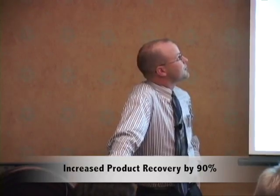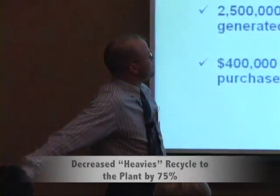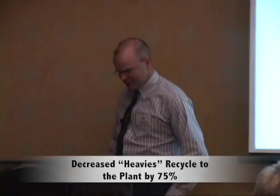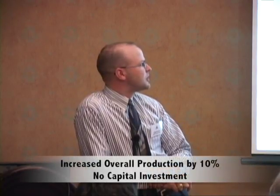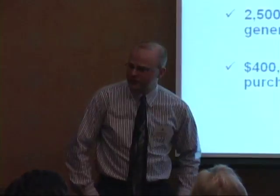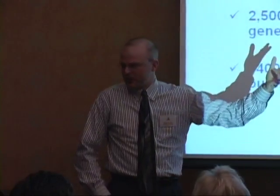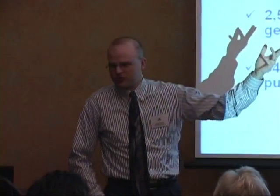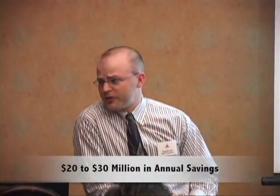We actually increased our annonin and all that we recovered from heavies cracking by about 90%, and that's a significant amount. We were able to decrease our heavies recycled through the plant by 75%. We've produced close to 2 million pounds a day of product, and we increased our production by about 10% with no capital investment — we actually set a new production record last month. We reduced our heavies by 2.5 million pounds, converting a 3-cent-a-pound product into a 60-cent-a-pound product. We're talking a $20–30 million range on annualized savings when you look at all the multi-variable tests we've done over the years.